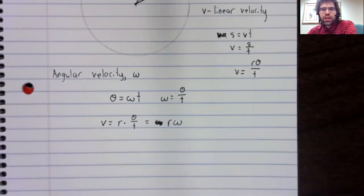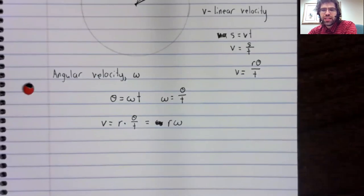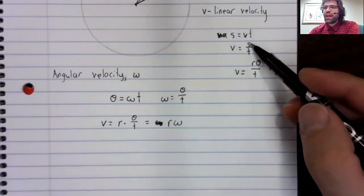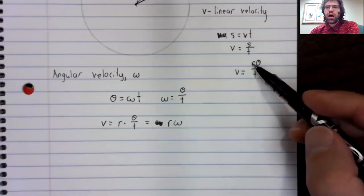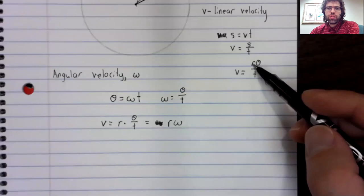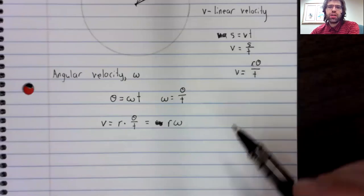And again, you need theta to be measured in radians here. Because to go from S to R theta, that formula required that theta be measured in radians.